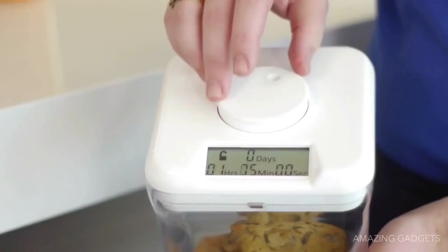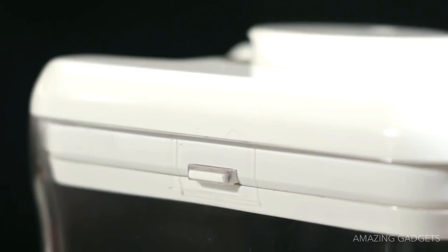First, place an item in the container. Next, rotate the dial to set the timer. And finally, press the dial to activate the lock.